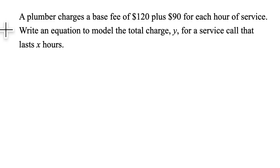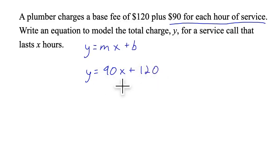A plumber charges a base fee of $120 plus $90 for each hour of service. Write an equation to model the total charge y for a service call that lasts x hours. Once again, we'll have y equals mx plus b, where m is the slope or rate of change, and b is the y-intercept or beginning point. $90 for each hour of service—that's our rate of change. The plumber is adding on $90 for each extra hour. We have y equals 90 times the number of hours plus this fee of $120 that the plumber always charges. So y equals 90x plus 120.